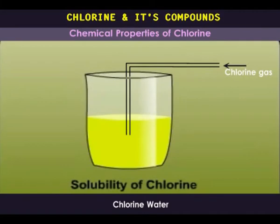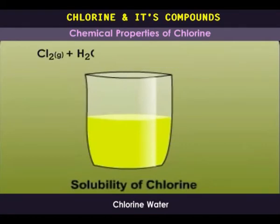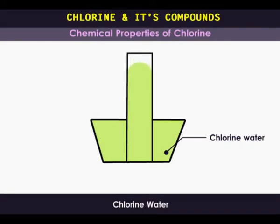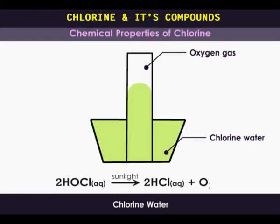When bubbled through water, chlorine dissolves, forming a pale yellow solution called chlorine water. Some of the chlorine reacts with the water to form a mixture of hydrochloric acid and chloric-1 acid, also called hypochlorous acid. When exposed to sunlight, oxygen is liberated. Chlorine water contains a mixture of hydrochloric acid and hypochlorous acid dissolved in water. Hypochlorous acid decomposes slowly to hydrochloric acid and oxygen.